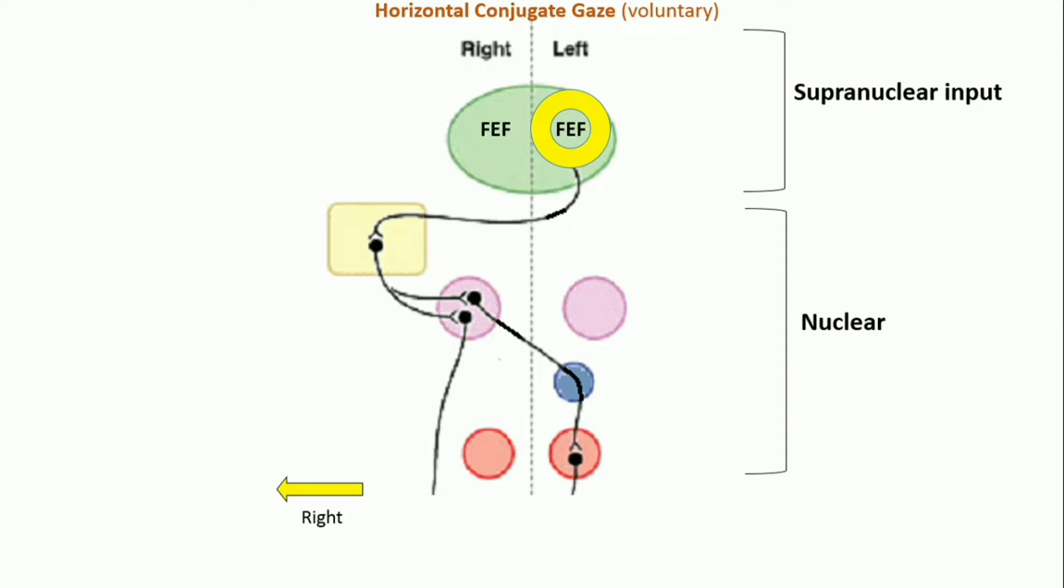Signals from the frontal eye field are sent to the perimedial pontine reticular formation of the opposite side. Located in the pons, PPRF sends axons to the ipsilateral abducent nucleus and contralateral medial longitudinal fasciculus, which in turn supplies the oculomotor nucleus.